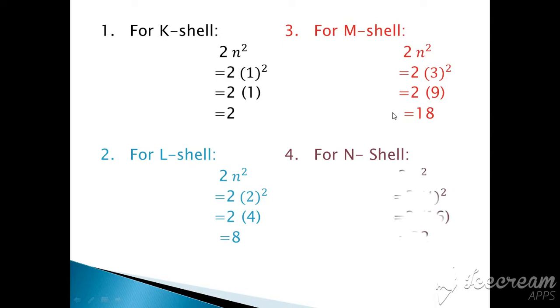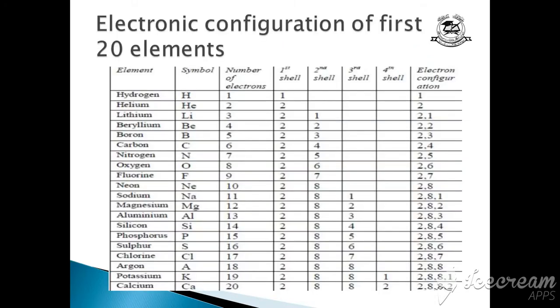And for N shell, in the same way, you can find out 2n², value of n is 4 because this is 4th shell. 4 square is equal to 16 and 16 twos are 32. This is given in your book also.